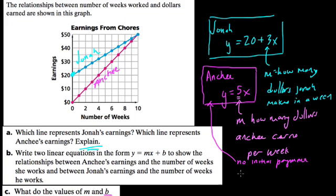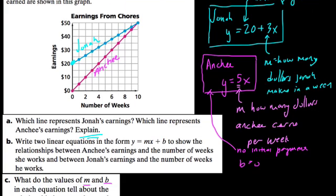And that means B equals 0 because B represents the starting earnings or the earnings at the start. Here, let me fix that arrow. This $20 represents the initial payment, so before you get paid for your weekly work, you're given money up front.